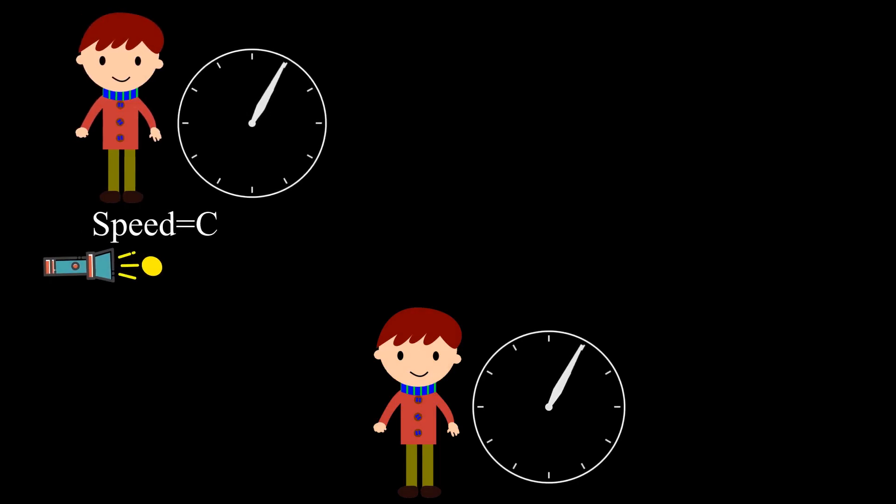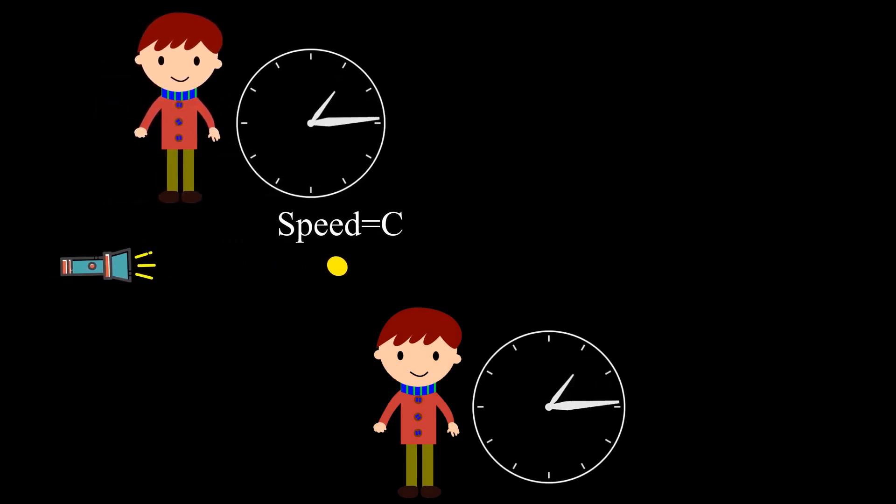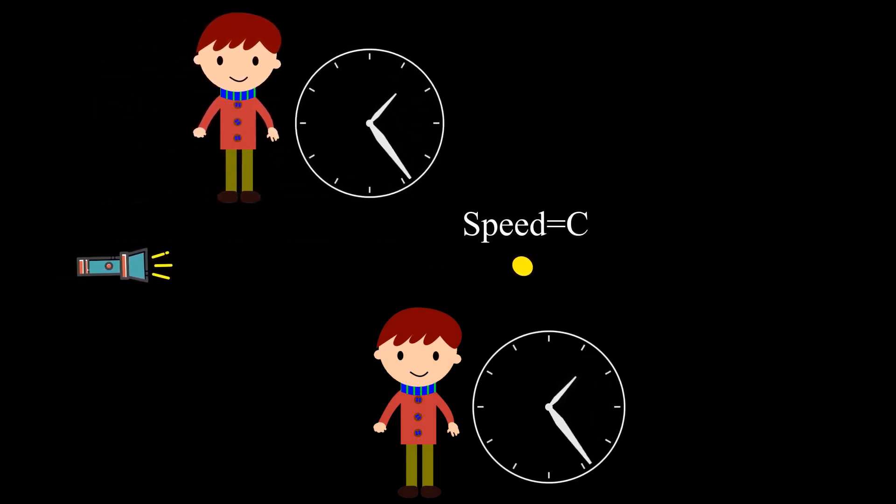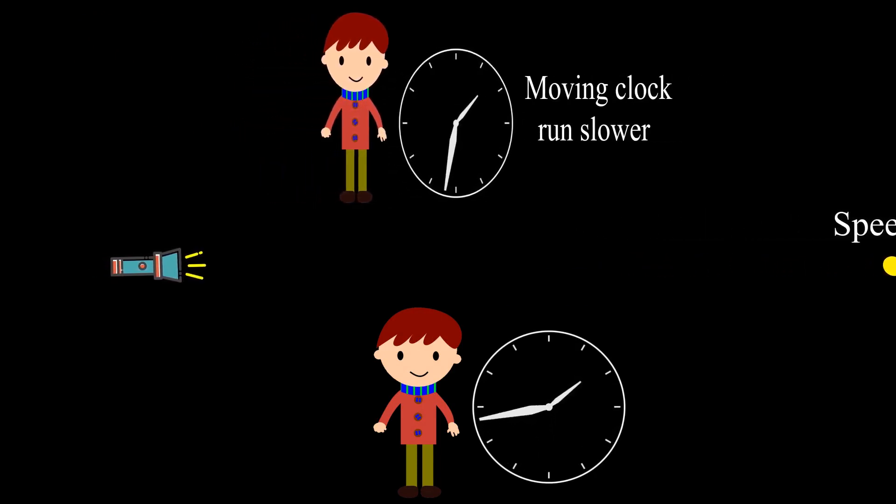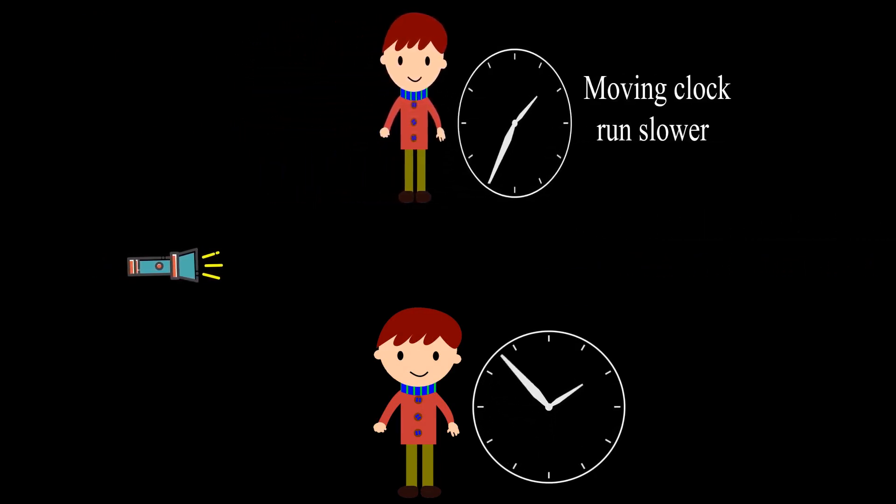So, for keeping this C constant for different inertial observers, the time dilates and the length contracts. Hence, relativity is there because there is no absolute time, no absolute length. Everything is relative.